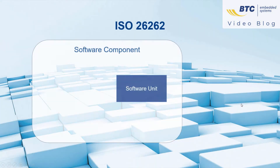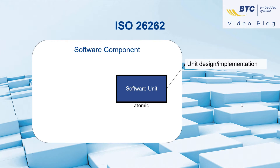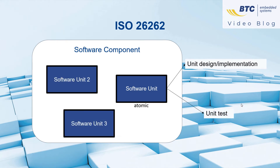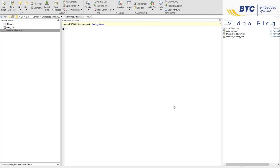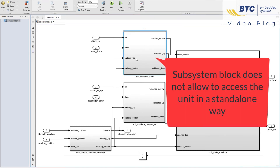The ISO 26262 standard defines a software unit as an atomic level of a software component which can be subject to standalone design and testing, and the software component contains one or multiple units. In Simulink, a software component is typically implemented in one model and the software units are modeled with subsystem blocks.